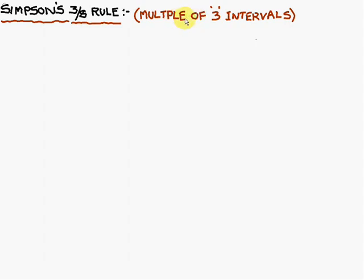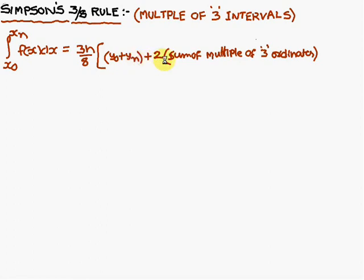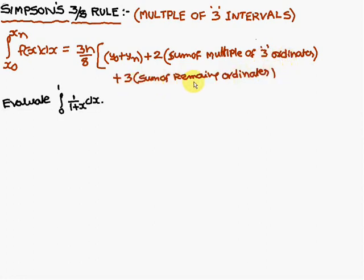That means if you come across 3 intervals, or 6, or 9, or 12, then only you have to use Simpson's 3/8th rule. The formula: integral x0 to xn f(x) dx is equal to 3h by 8 into y0 plus yn plus 2 times sum of multiple of 3 ordinates plus 3 times sum of remaining ordinates.